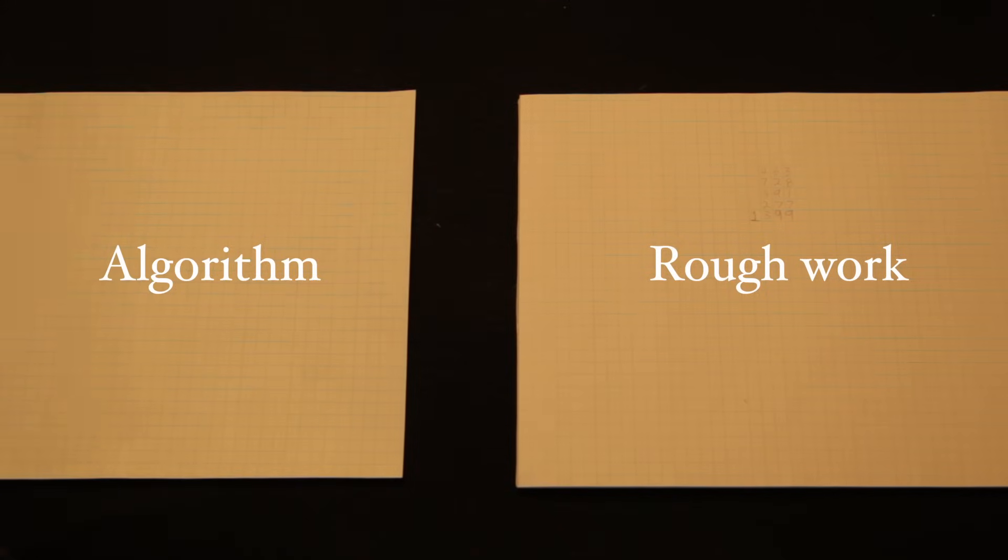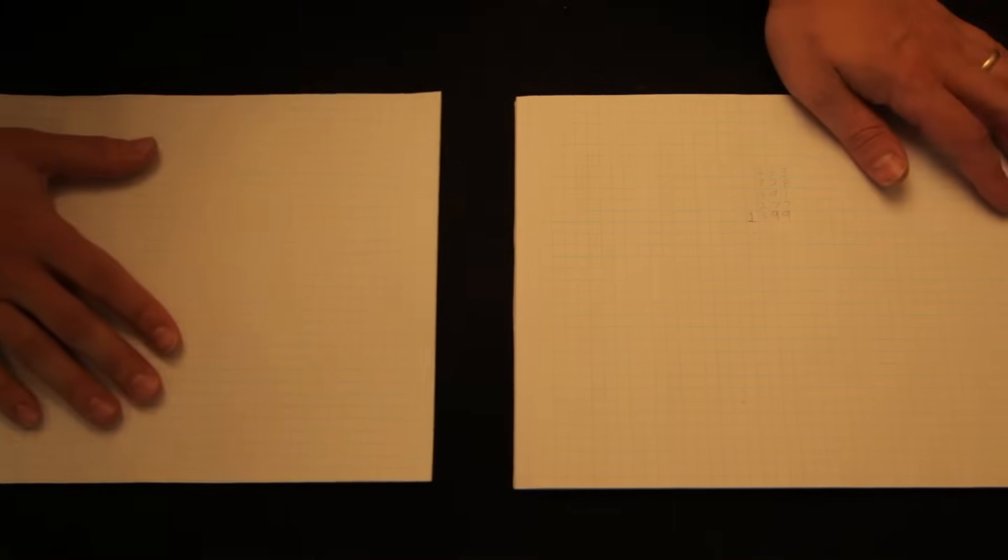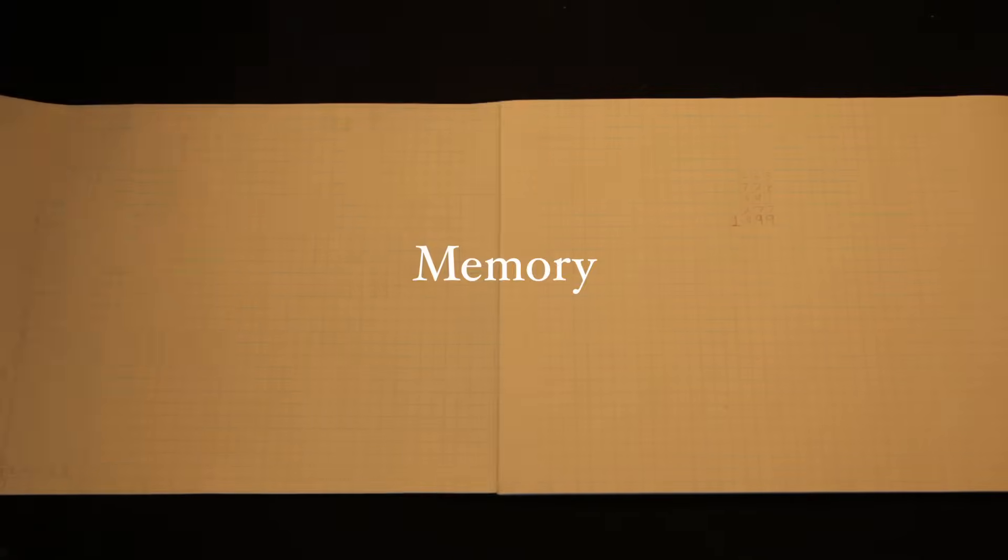And to further simplify this, Turing reminds us that the book you provide, or the algorithm, and the rough work, could all be done on one big piece of paper. And that paper could be arranged in a long array instead of a 2D sheet.